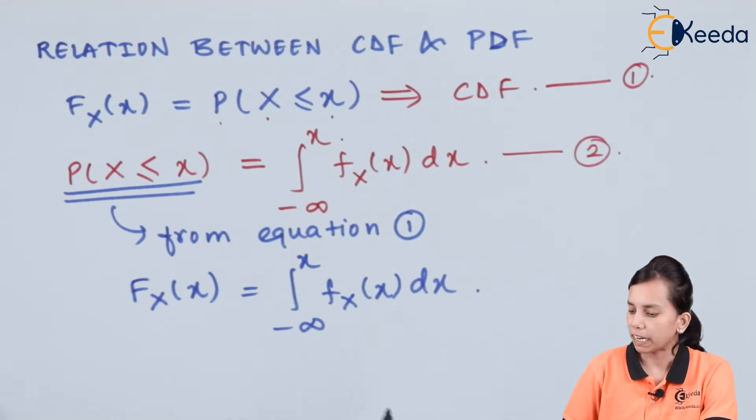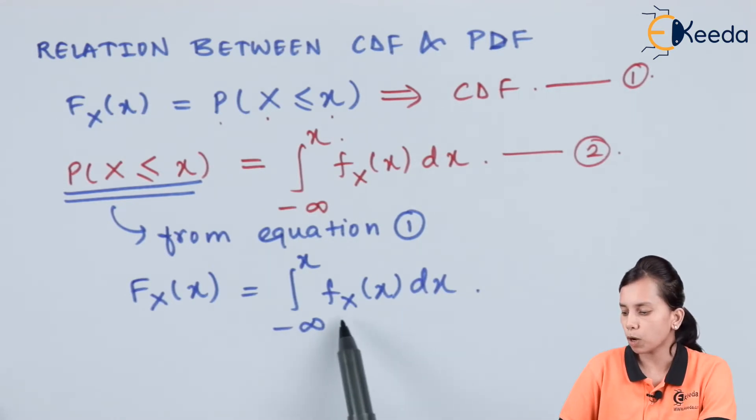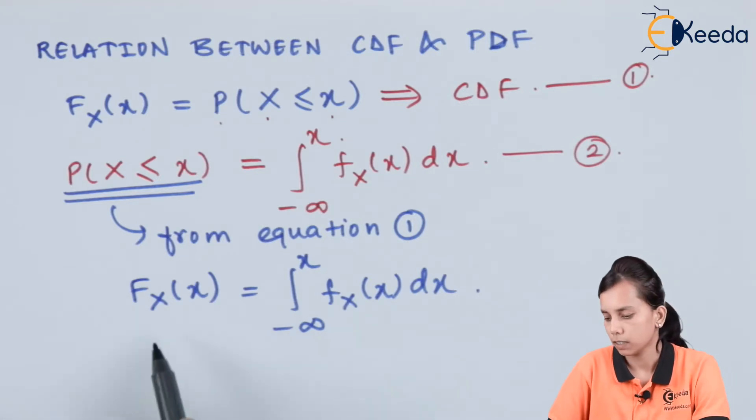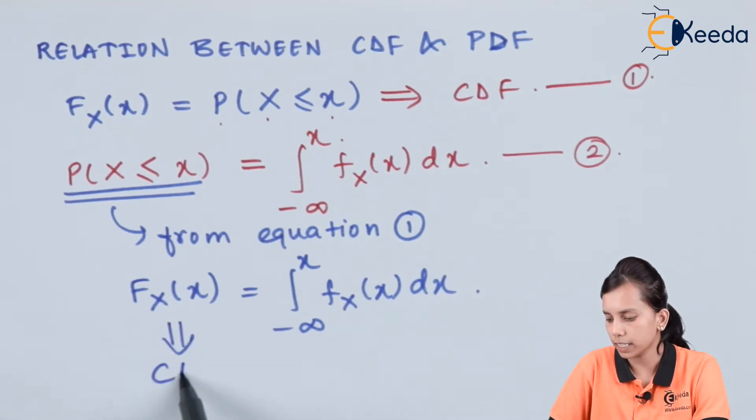So, whenever we are integrating the probability density function from minus infinity to x, we are getting F_X(x) which is nothing but CDF.